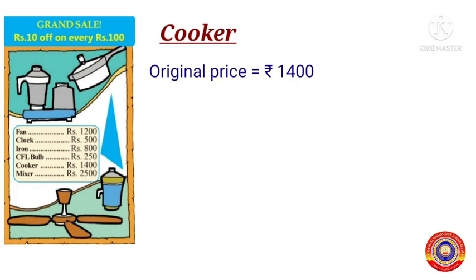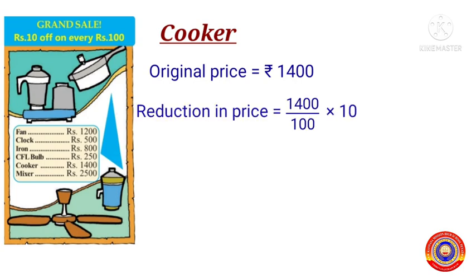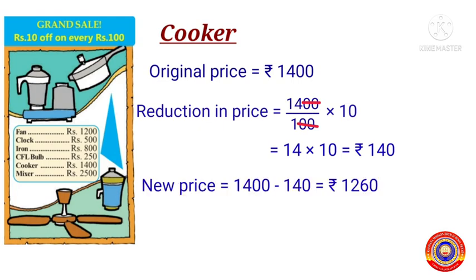Next item is a cooker. The original price of a cooker is equal to 1400 rupees. The reduction in price is equal to 1400 ÷ 100 × 10. After cancelling the zeros, we get 14 × 10, that is equal to 140 rupees. Therefore the new price of a cooker is equal to 1400 minus 140.